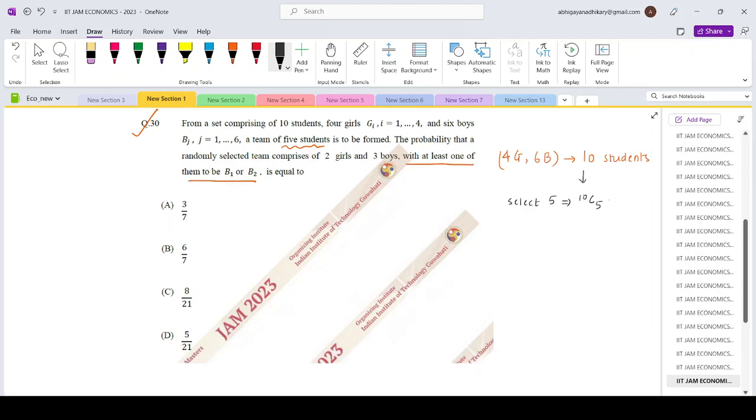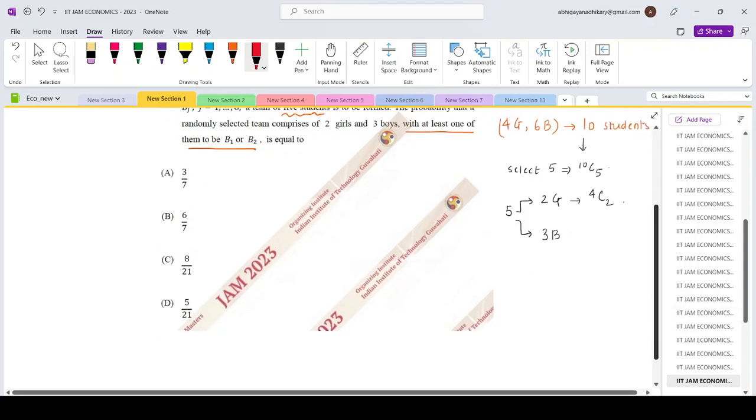Out of the 5 students, 2 have to be girls. Total there are 4 girls, so you have to choose 2 girls out of 4 which is 4C2. The remaining have to be 3 boys out of which the condition is that at least one of them has to be B1 or B2.